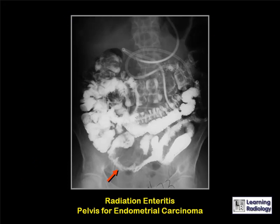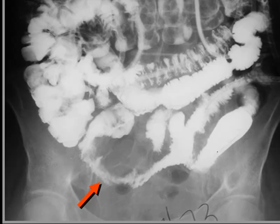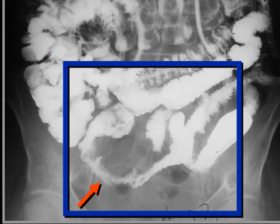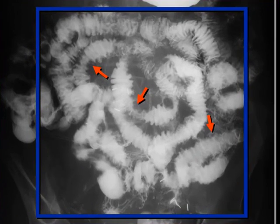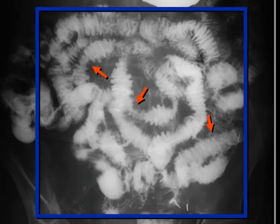This is an example of radiation enteritis in a female who received external radiation for endometrial carcinoma. The red arrow points to a loop of jejunum that is fixed in place with a narrowed lumen and irregular margins, and the blue box shows approximately the size of the radiation portal. In another individual irradiated for ovarian carcinoma with a much larger portal, red arrows point to multiple loops of jejunum with thickened walls and submucosal infiltration causing a picket fence appearance.